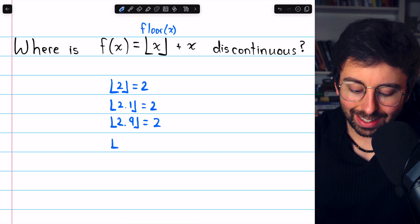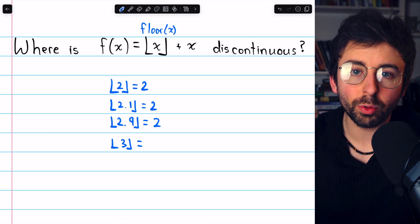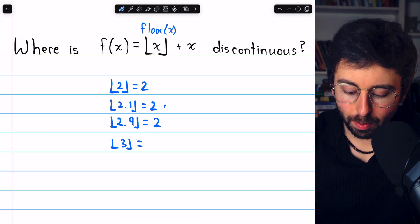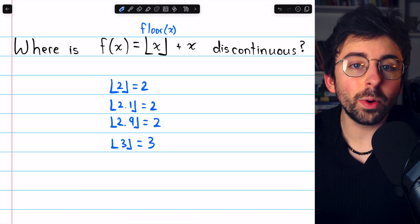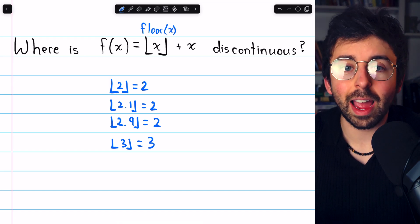But as soon as you get to the next integer, the floor of 3, the output jumps from 2 all the way up to 3. So the floor function is discontinuous at every integer.